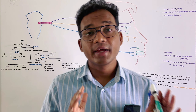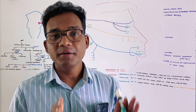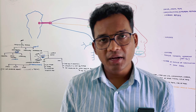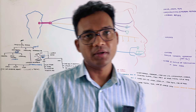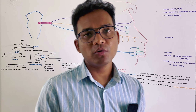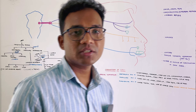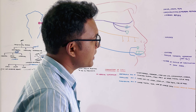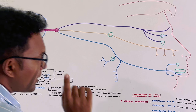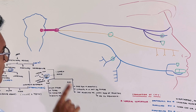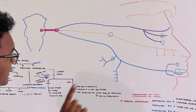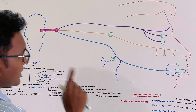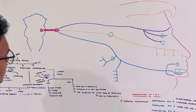I am going to examine the 5th cranial nerve, the trigeminal nerve. First, I will cover basic anatomy. The trigeminal nerve is a mixed nerve, having both sensory and motor properties.